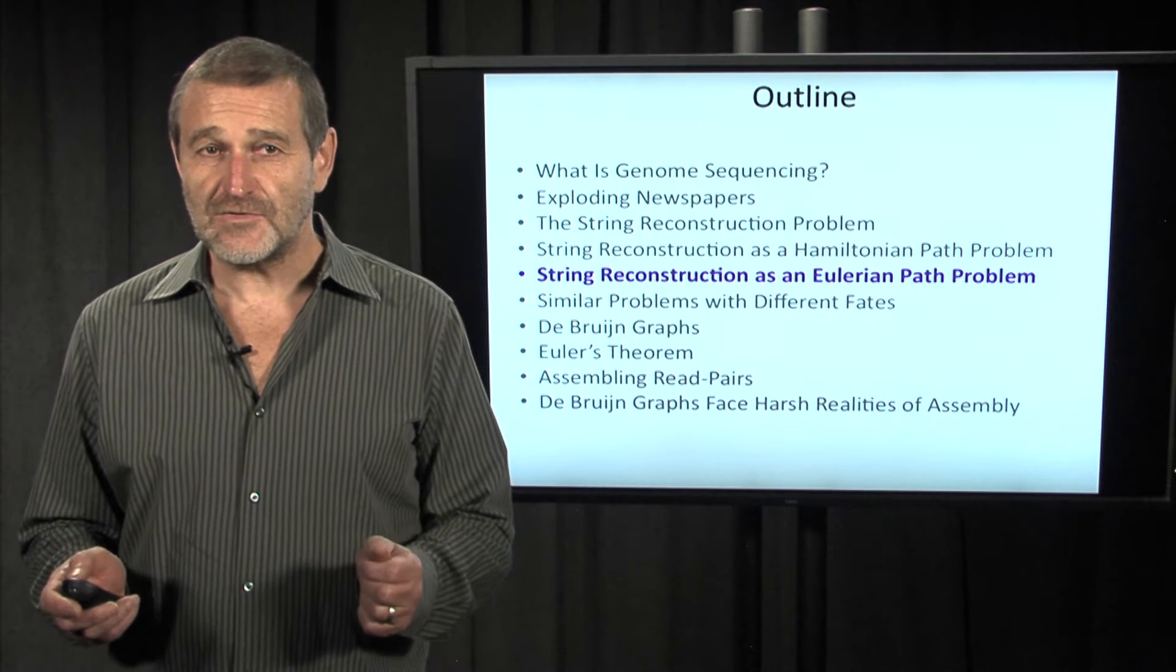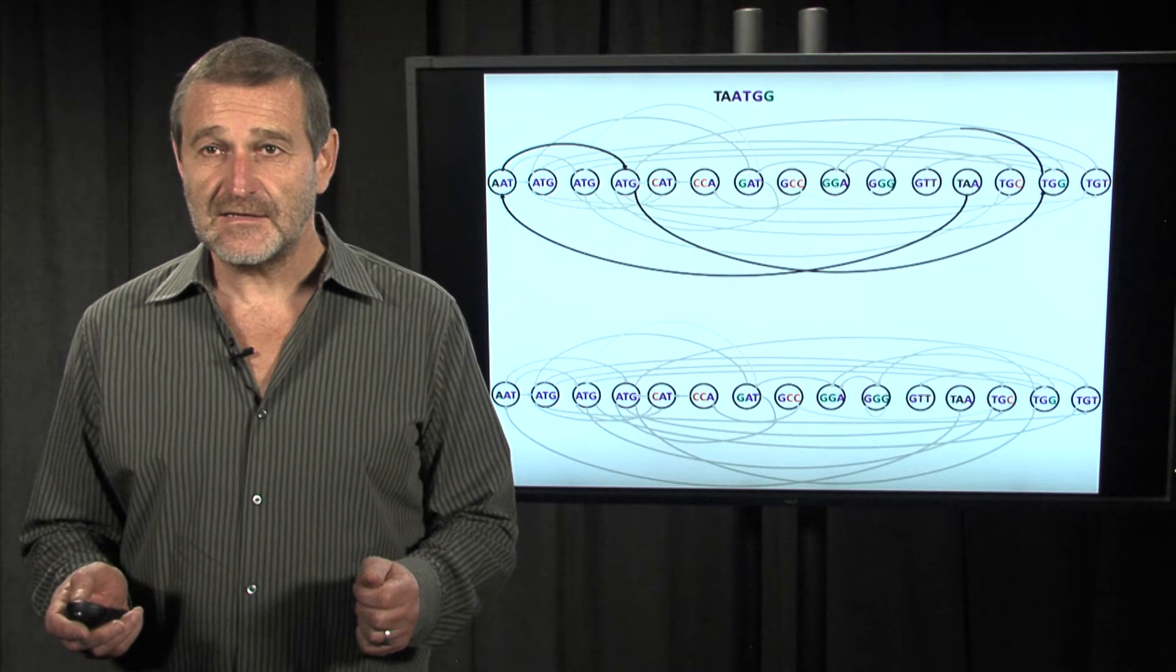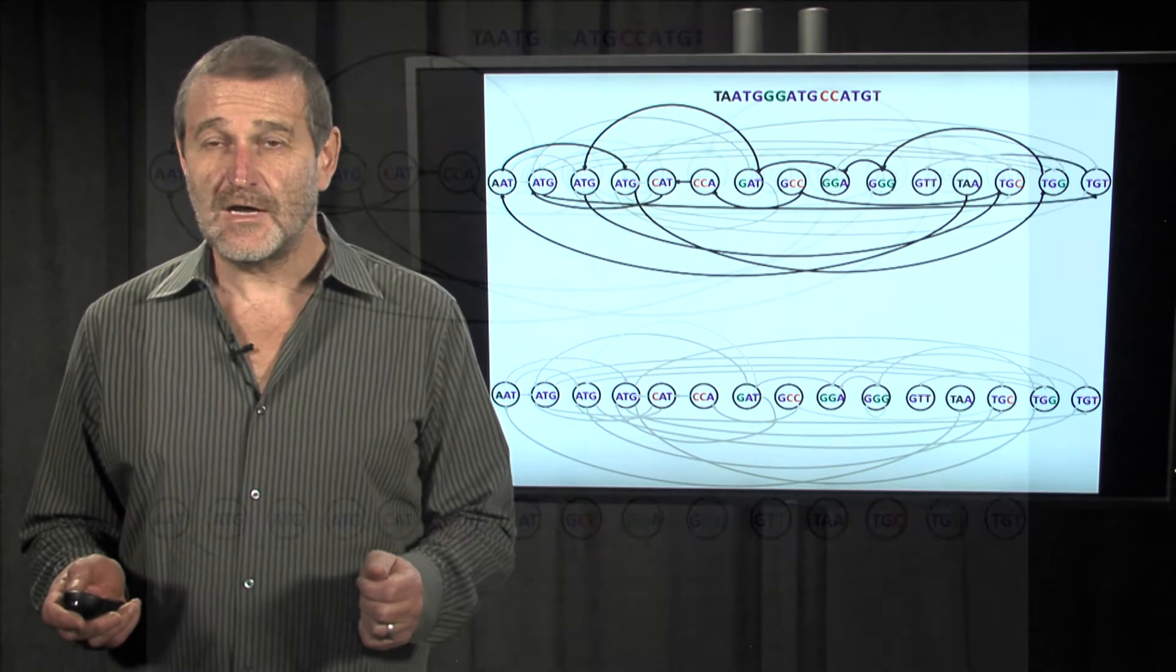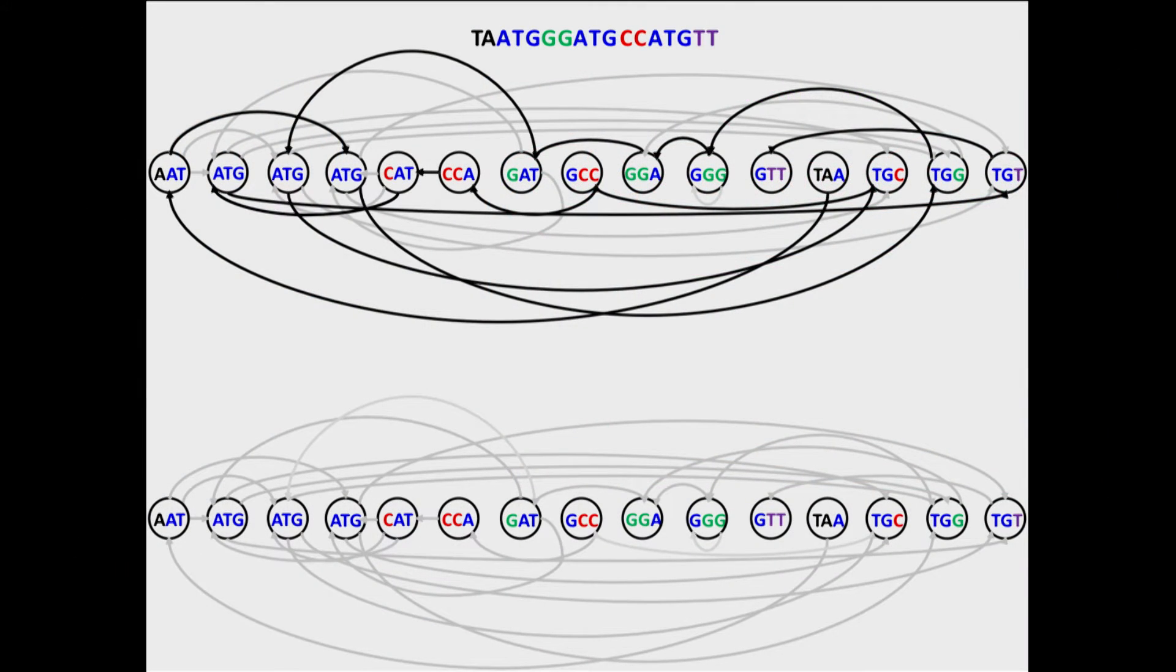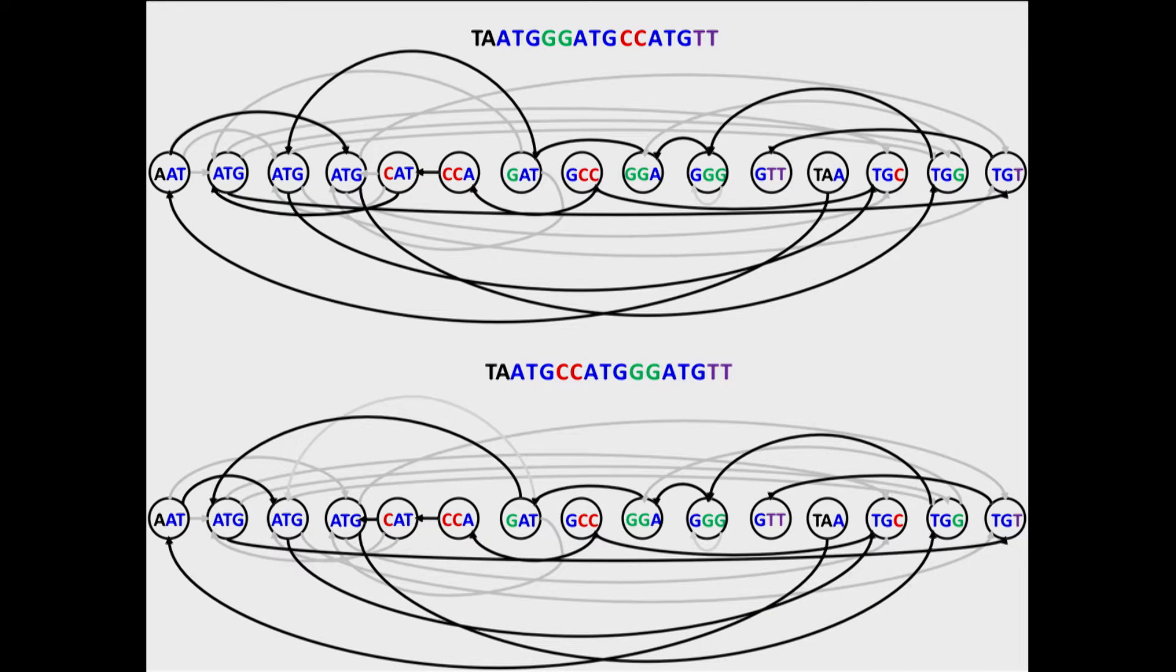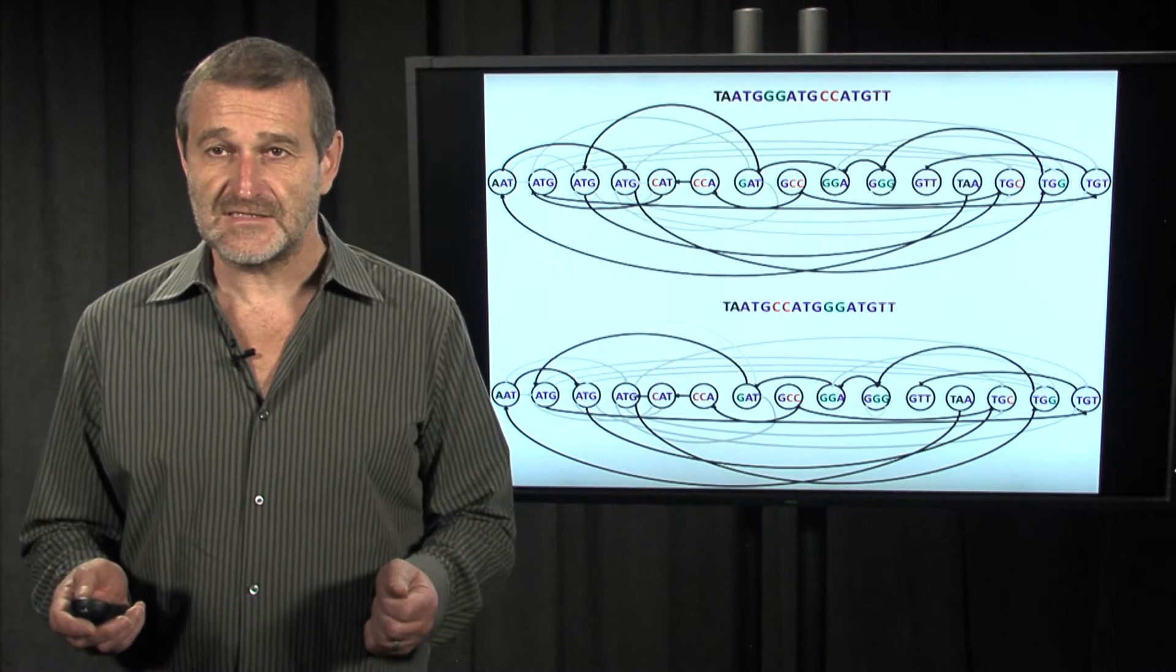The first thing to notice is that there are two Hamiltonian paths in the graph that Sean presented. This is the first one, and this is the second one. And while Sean presented his very natural approach, it's absolutely unclear how to find either of these paths.